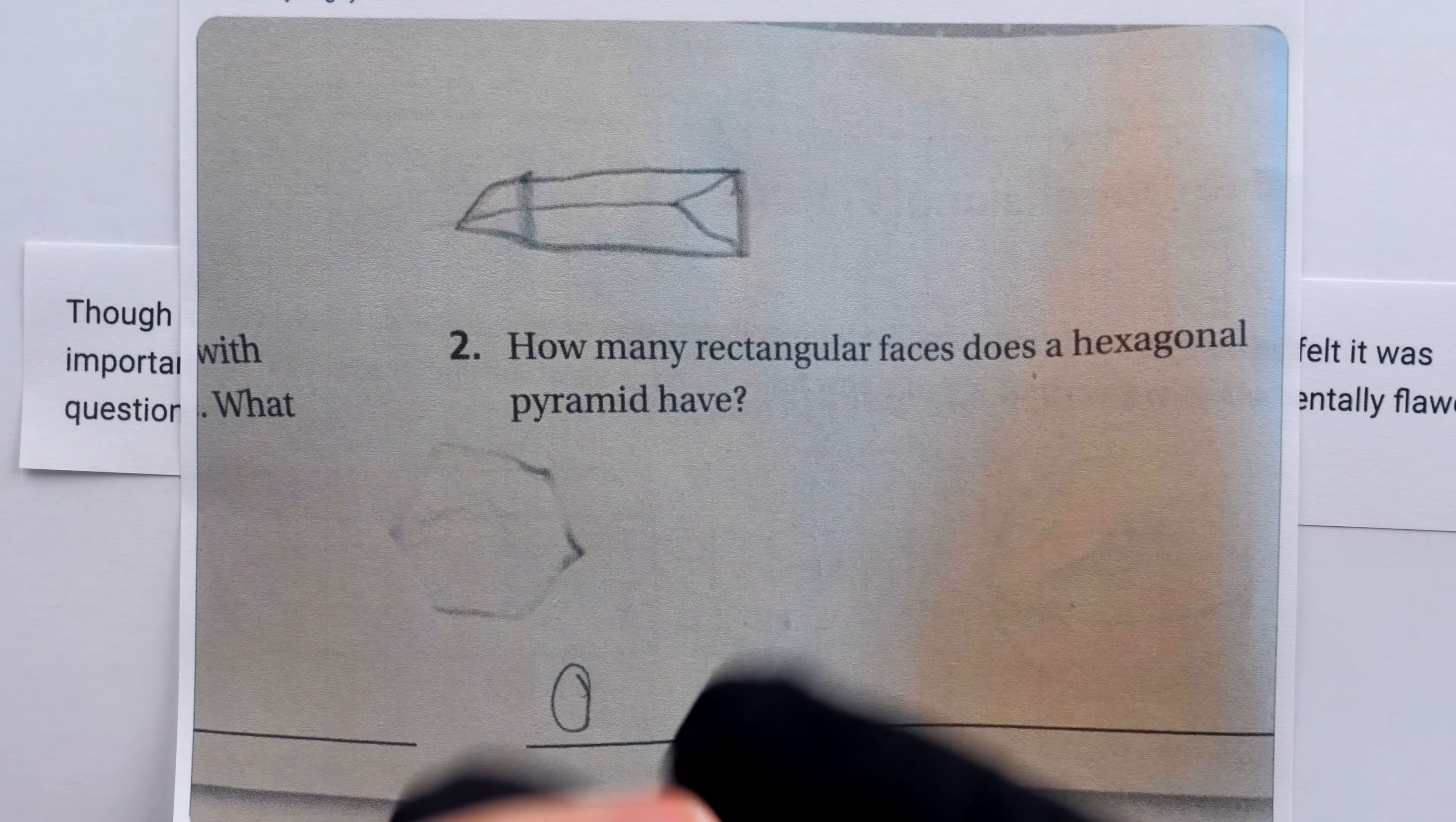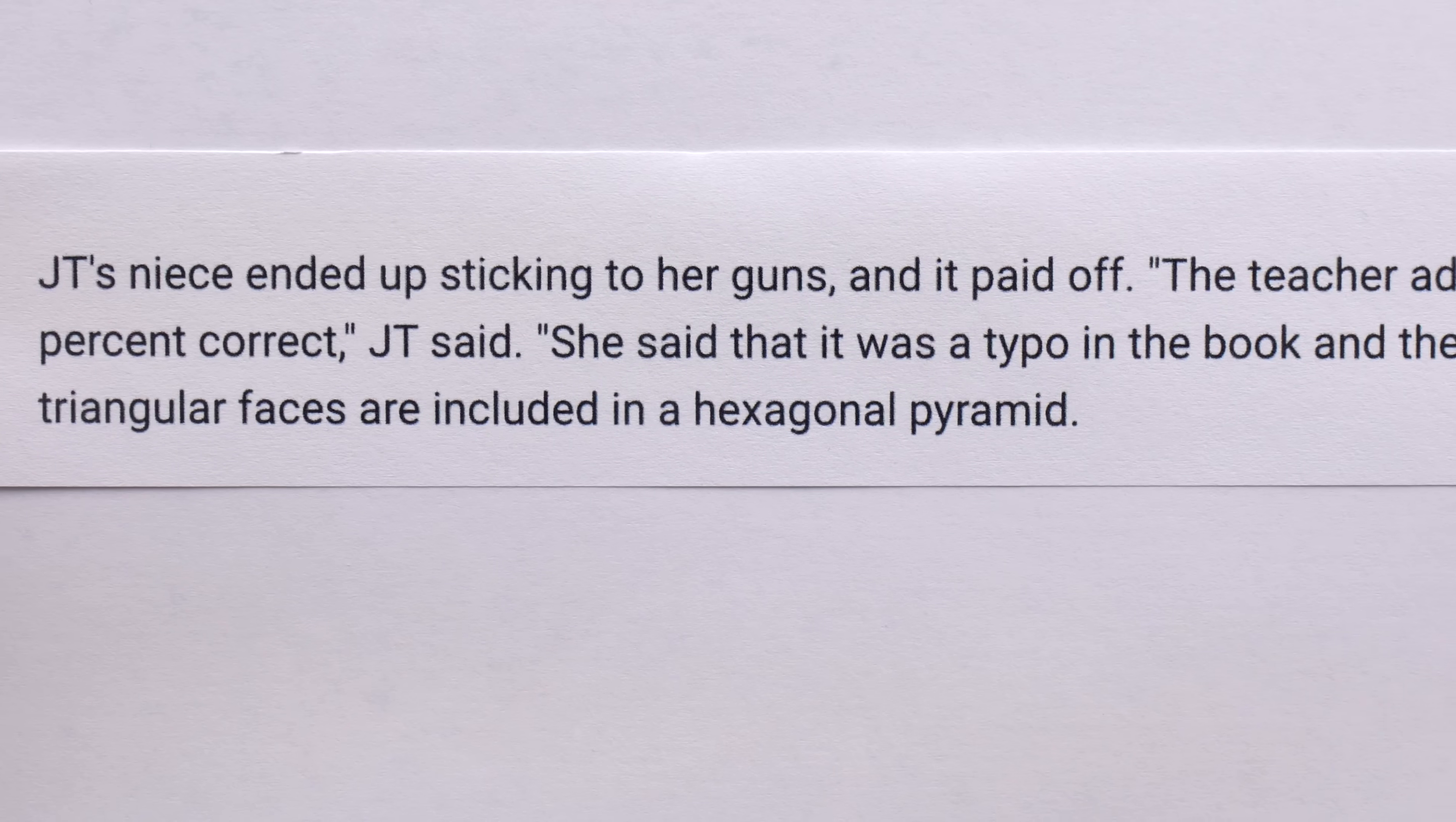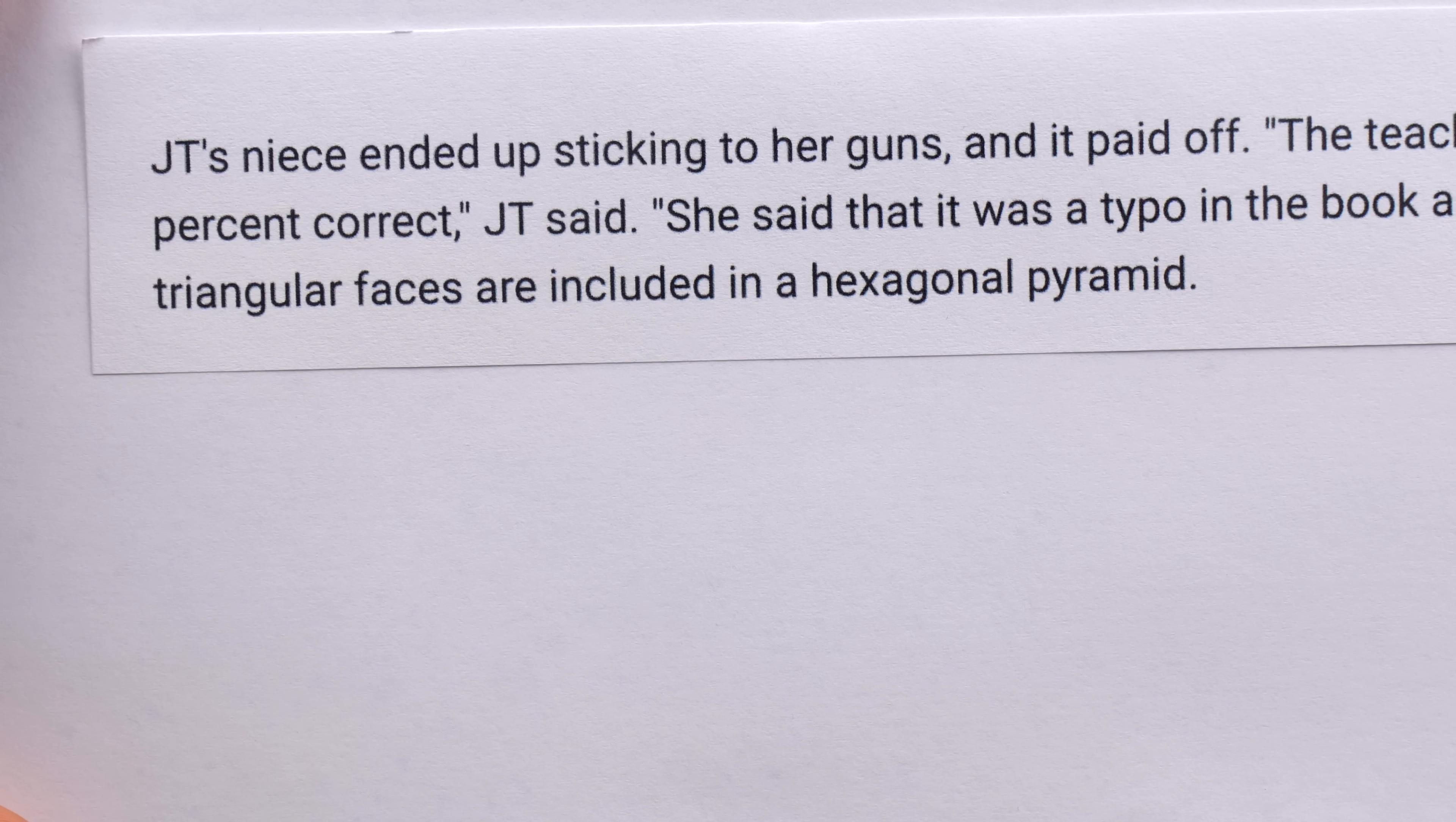So I wanted to include that detail, but let's go back to our main narrative. Of course, the greatest stories are not about things that happen, but the people things happen to. And in this tale, we are witnessing some fine character development. JT's niece ended up sticking to her guns, and it paid off. The teacher admitted that my niece was 100% correct, JT said. She said that it was a typo in the book, so again, the disagreement here must be due to an answer in the book, because there's no typo here, unless there's a corresponding answer that disagrees with the question. Assuming that's the case though, she says it was just a typo, and the question meant to ask how many triangular faces are included in a hexagonal pyramid.